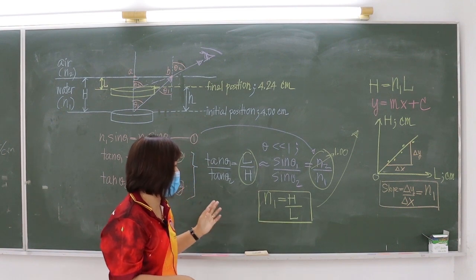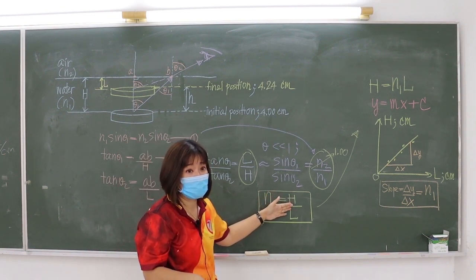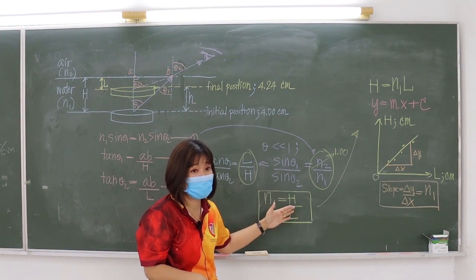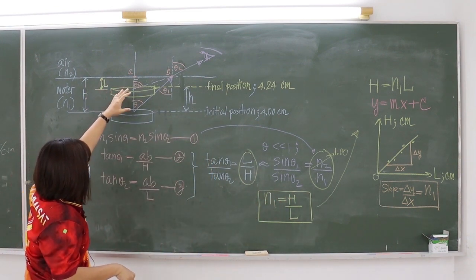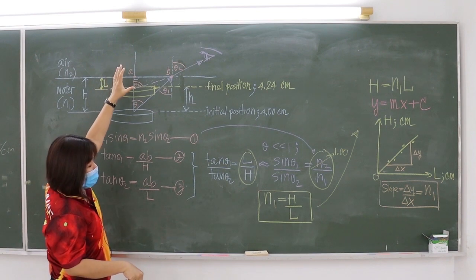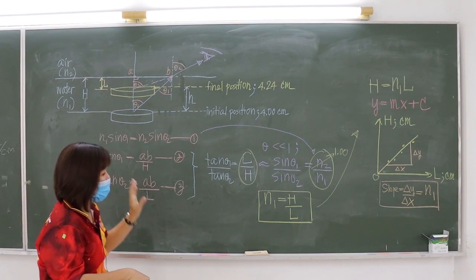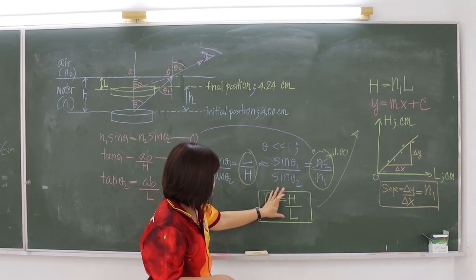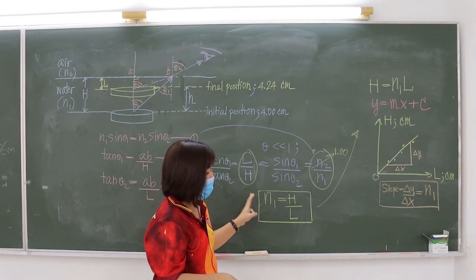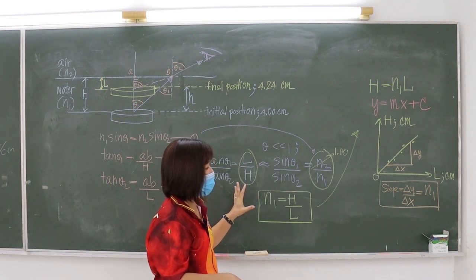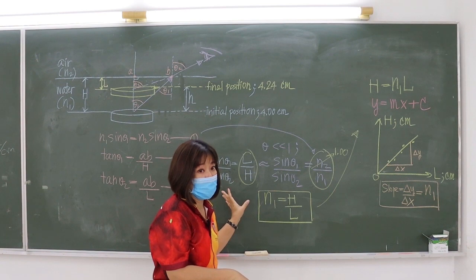You vary the water depth H starting from 1.00 cm, then 2, 3, and 4 cm. As you pour more water and H increases, L also increases. You calculate N1 for each depth and take the average to get the refractive index of water.